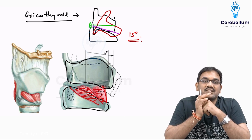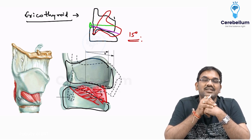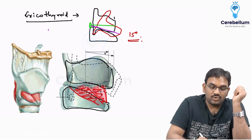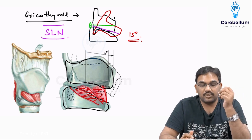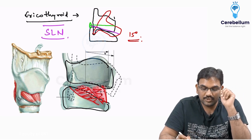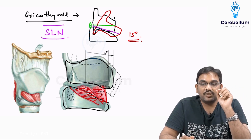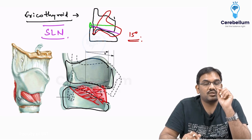Cricothyroid is supplied by your superior laryngeal nerve. All intrinsic muscles are supplied by the recurrent laryngeal nerve except cricothyroid, which is supplied by the superior laryngeal nerve. Remember this point - we will come across this again in nerve supply.